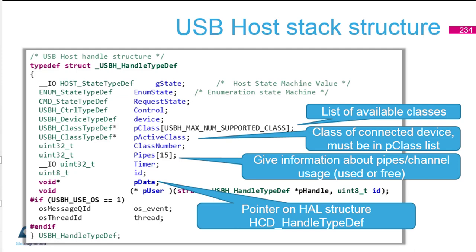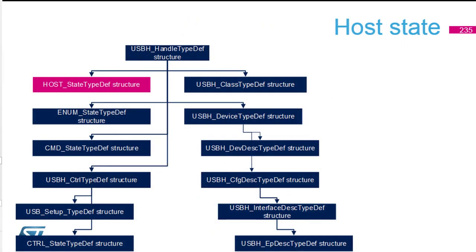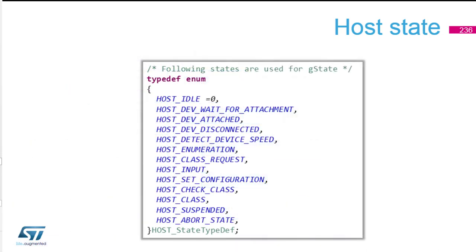Here we are showing the active class and also the pipes — the channels. In the host state, this tells us where we are during the USB host process.